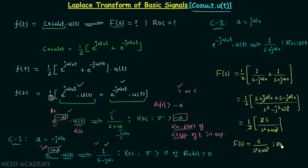The region of convergence is σ > 0, since both component transforms share the same ROC. It is important to multiply u(t) to cos(ω₀t) because we are calculating the bilateral Laplace transform — if you don't multiply by u(t), the Laplace transform will not exist. This will be proved in a future lecture. So that's all for this lecture; see you in the next one.